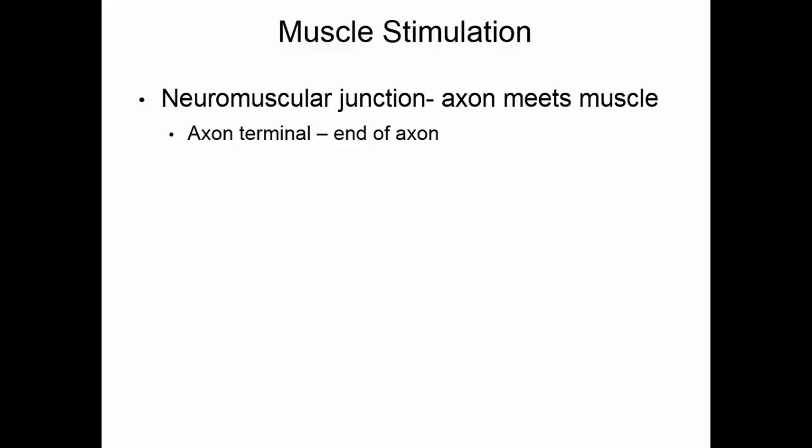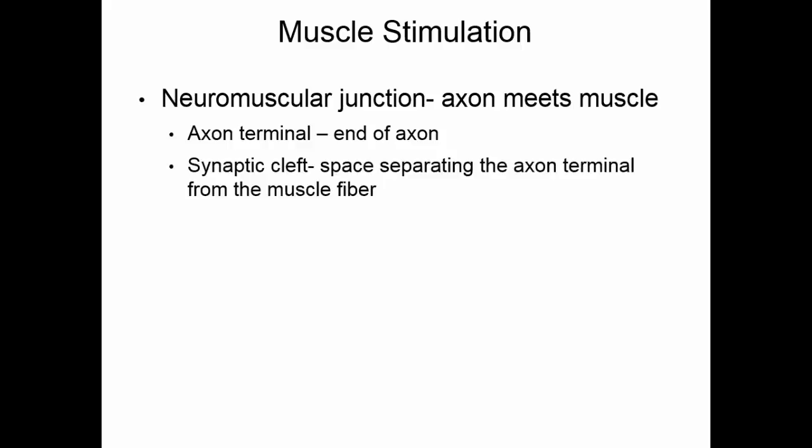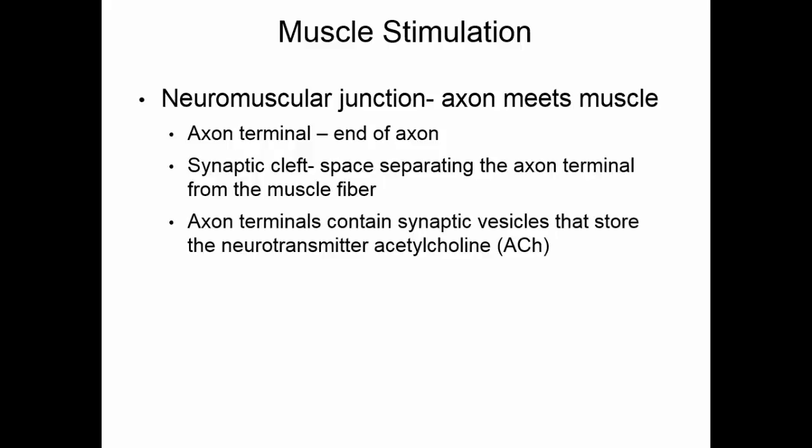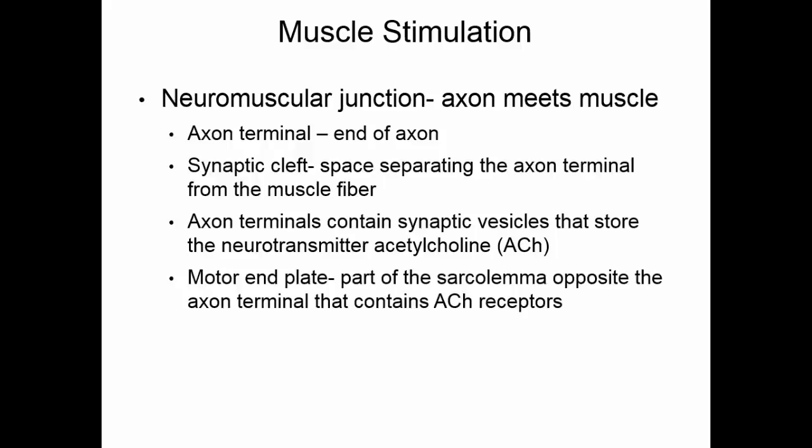The axon terminal is the very end of the nerve cell, the end of the axon. It does not directly touch the muscle cell. There is a small gap between the axon and the muscle cell — this is called the synaptic cleft. In the axon terminals, there are vesicles that store the neurotransmitter acetylcholine. The motor end plate is that part of the sarcolemma that's immediately opposite the axon terminal, and this part of the muscle fiber will contain acetylcholine receptors.